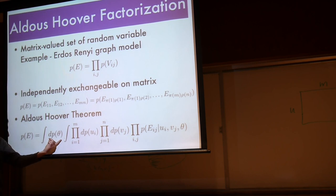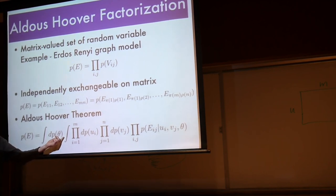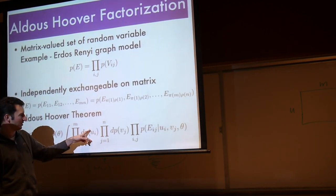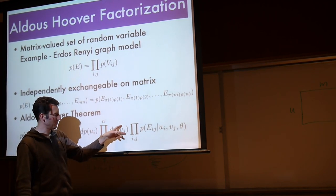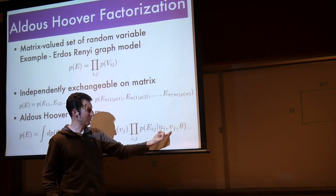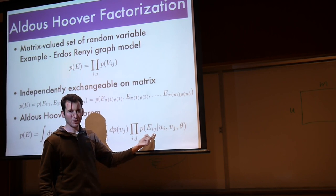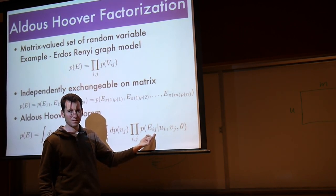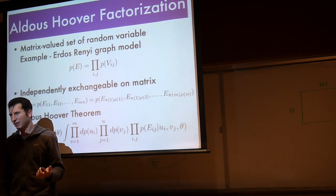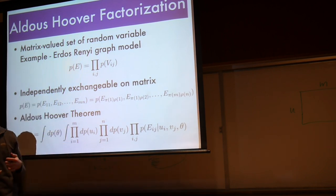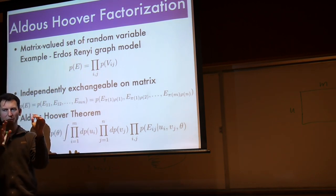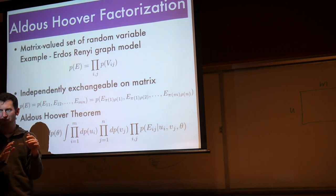Let's just look at it. Here we have a term that looks just like de Finetti. We have some global parameter. Here we have some row-specific latent parameters that I'm drawing independently. Some column-specific parameters that I'm drawing independently. And then here, conditioned on some global parameter and those row- and column-specific parameters, I can draw all the entries of the matrix independently from each other.